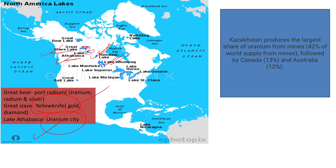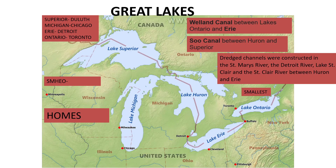Now let us understand the Great Lakes region. The Great Lakes of USA and Canada comprise five lakes: Lake Superior, Lake Michigan, Lake Huron, Lake Erie, and Lake Ontario. Superior, Michigan, Huron, Erie, and Ontario — these are the Great Lakes.